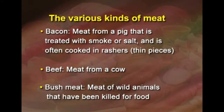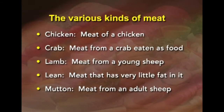The various kinds of meats include: bacon — meat from a pig treated with smoke or salt, often cooked in rashers; beef — meat from cow or buffalo; bush meat — meat of wild animals killed for food; and crab — meat from crab eaten as food.